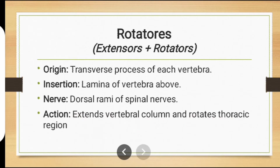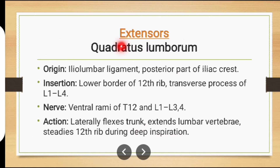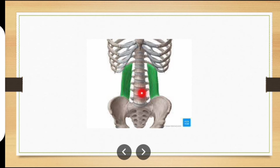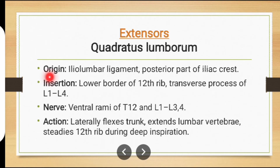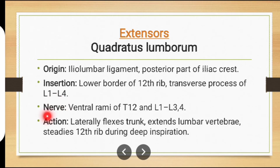The next muscles are the extensors. The first muscle is quadratus lumborum muscle. The muscle in green is quadratus lumborum muscle. Origin: ilio-lumbar ligament and posterior part of iliac crest. Insertion: lower border of 12th rib and transverse processes of L1 to L4. Nerve supply: ventral ramus of T12 and L1 to L3/L4. Action: lateral trunk flexion, extension of lumbar vertebrae, and steadies 12th rib during deep inspiration.